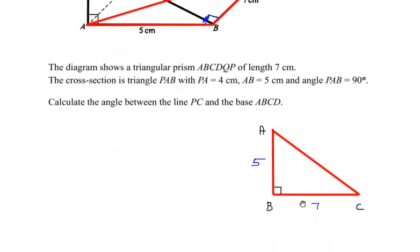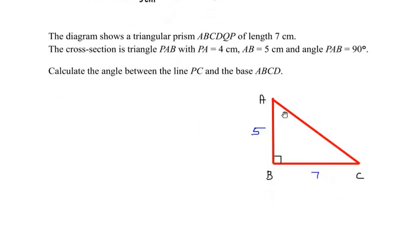We are trying to find the length of AC. Since this is a right angle triangle, we can use the Pythagorean theorem and write the hypotenuse AC as: AC squared equals the sum of the square of the rest two legs of the right angle triangle.